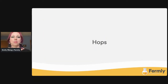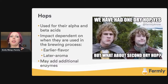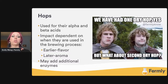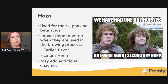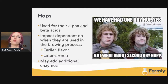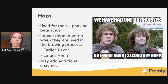Next, we have hops. We use them for their alpha and beta acids, and their impact is dependent on when they are used in the brewing process. Added earlier, you're going to get more flavor; added later, you get more aroma. Adding hops can also add additional enzymes depending on when you put them into the beer, which may contribute to some extra fermentation — this is known as hop creep. I've submitted a talk on hop creep to CBC, and I'd love to talk more about it.